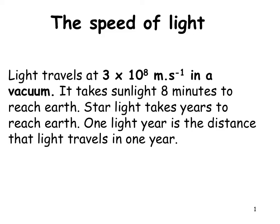Light travels at 3 times 10 to the power of 8 meters per second in a vacuum. This is a fixed number — it is on the information sheet and it is always going to be the same.